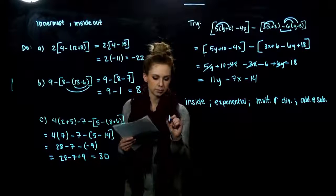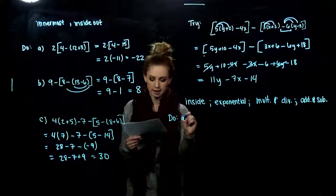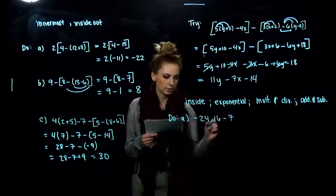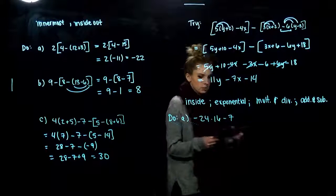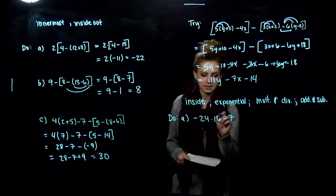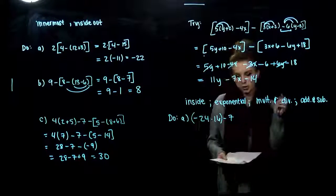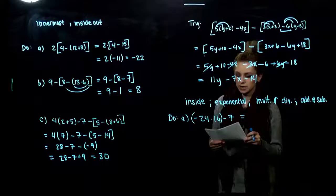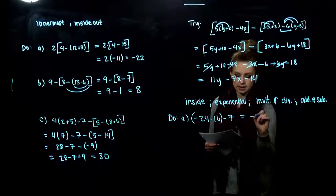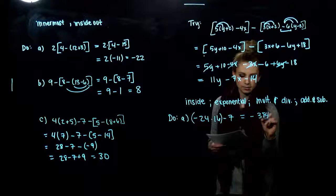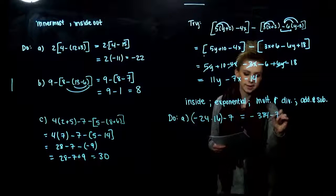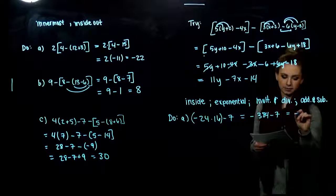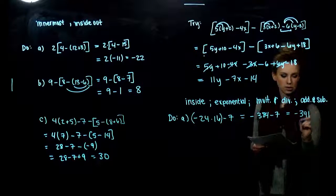So we'll just practice some more. Work with the orders of operation. So what has to happen first in that first example? Part A. Multiplication needs to happen first. So I'm going to throw some grouping around there. So I know what I'm evaluating first when I look back later. So negative 24 times 16 gives me negative 384. And I'm subtracting 7 from that. So all together we have negative 391.